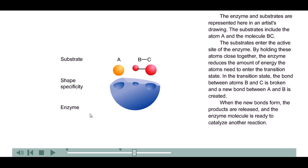The enzyme and substrates are represented here in an artist's drawing. The substrates include the atom A and the molecule BC. The substrates enter the active site of the enzyme. By holding these atoms close together, the enzyme reduces the amount of energy the atoms need to enter the transition state. In the transition state, the bond between atoms B and C is broken, and a new bond between A and B is created. When the new bonds form, the products are released, and the enzyme molecule is ready to catalyze another reaction.